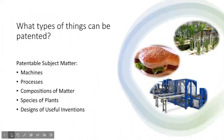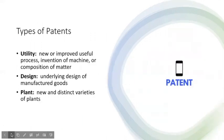Generally, you can obtain a patent for the following types of things: machines, processes, compositions of matter, species of plants, and designs of useful inventions. There are three patent type applications you can pursue. Utility patents protect new or improved useful processes, inventions of machines, or compositions of matter — utility patent applications are by far the most common patent type granted. Design patents protect the underlying design of manufactured goods; something eligible for design patent protection might also be eligible for trademark protection, which could be better since trademark protection lasts longer. Lastly, plant patents protect new and distinct varieties of plants — you cannot get a plant patent for a discovery of an existing plant.